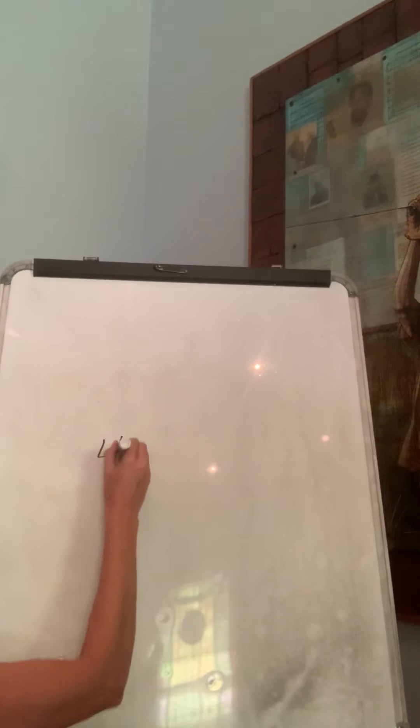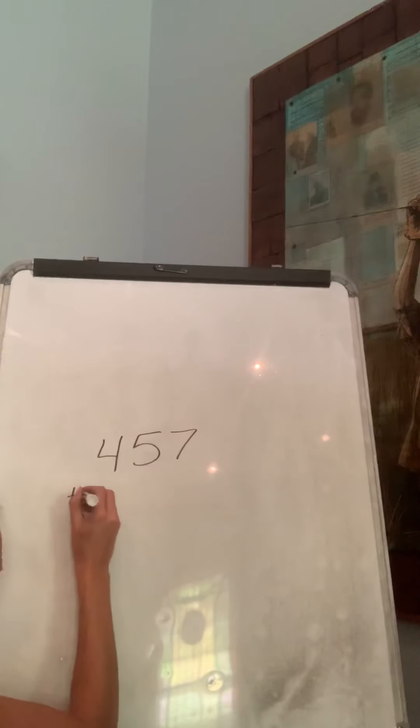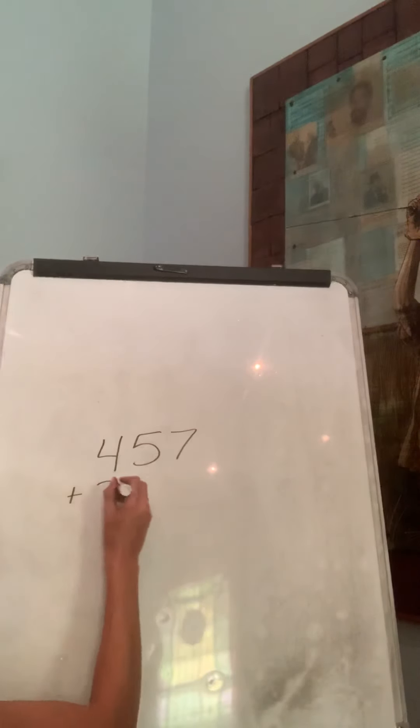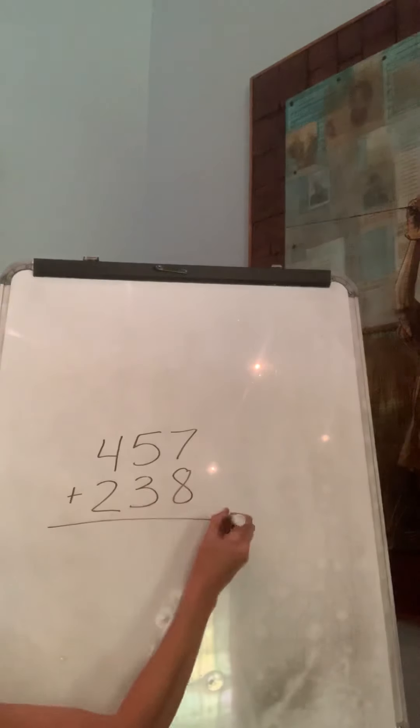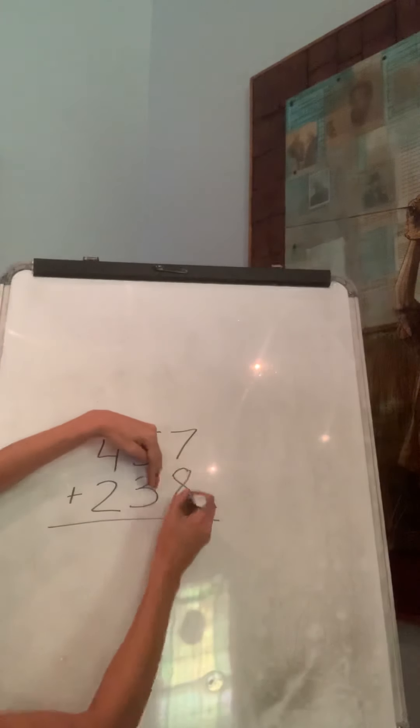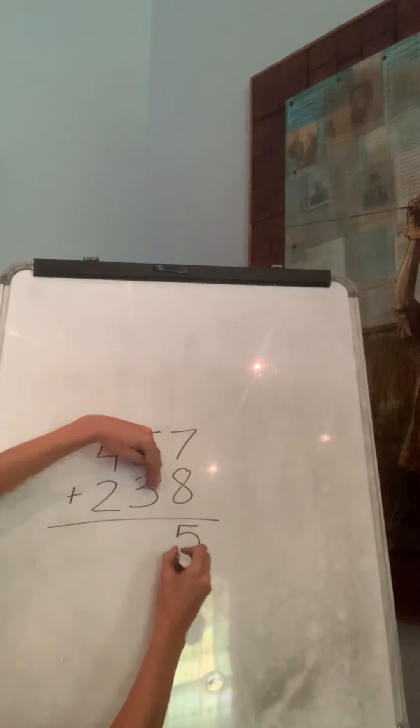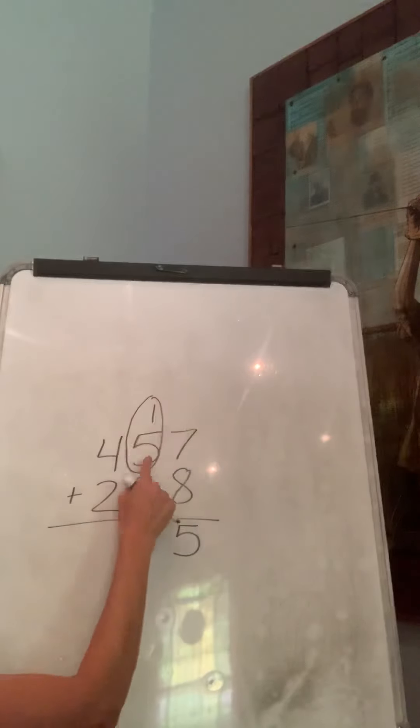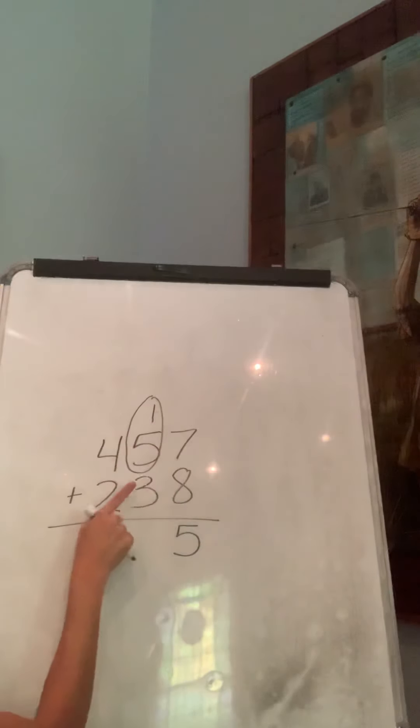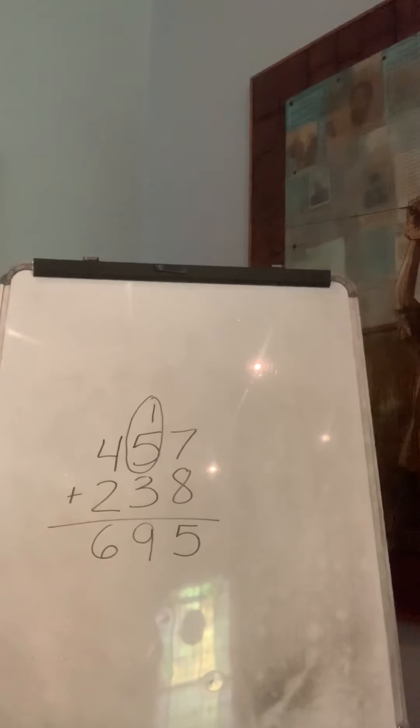Now we're doing it with some hundreds. Don't be scared, you still know how to do this. So 457 plus 238. We always start with the ones. 8 plus 7 is 15. 5 plus 1 is 6, 7, 8, 9. 4 plus 2 is 4, 2 more, 5, 6. 695.